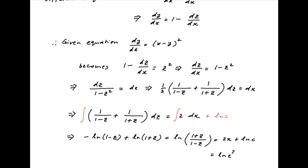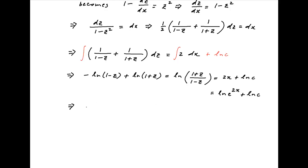The right-hand side can be written as ln(e raised to the power 2x) plus ln c. Therefore, ln[(1 plus z)/(1 minus z)] is equal to ln(c times e raised to the power 2x).